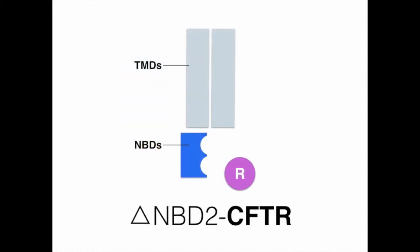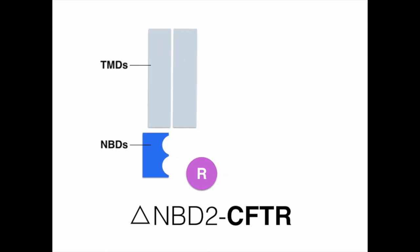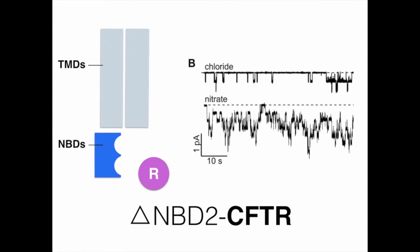This conclusion is further supported by an experiment on ΔNBD2 CFTR, a construct with the whole NBD2 deleted. In these recordings, the level of activity increases immediately upon solution changes from one with chloride to one with nitrate. This result thus indicates that nitrate increases the activity of CFTR even when we take ATP or ATP-induced NBD dimerization out of the picture.